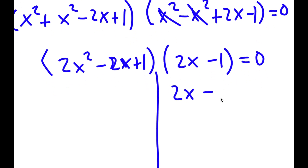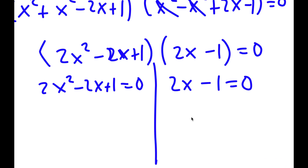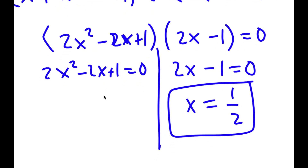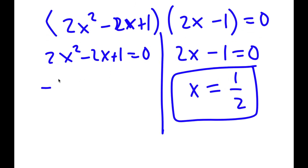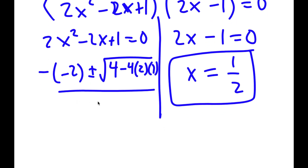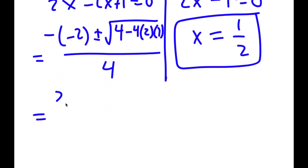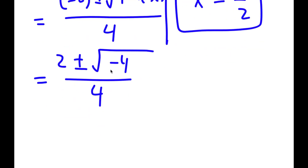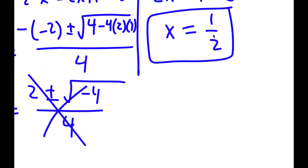This gives me two equations: 2x minus 1 equals 0, and 2x squared minus 2x plus 1 equals 0. For 2x minus 1 equals 0, x is simply equal to one half. For 2x squared minus 2x plus 1, using the quadratic formula: negative of negative 2 plus or minus the square root of negative 2 squared minus 4 times 2 times 1, all over 2 times 2. This is 2 plus or minus the square root of 4 minus 8, which is negative 4, over 4. We have the square root of a negative number, which we can't do, so my only solution is x equals one half.